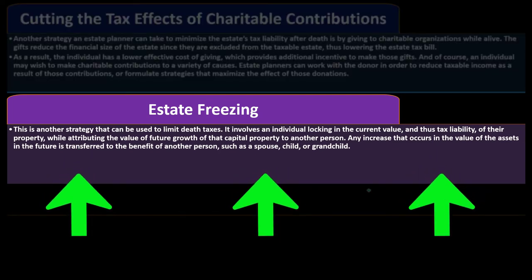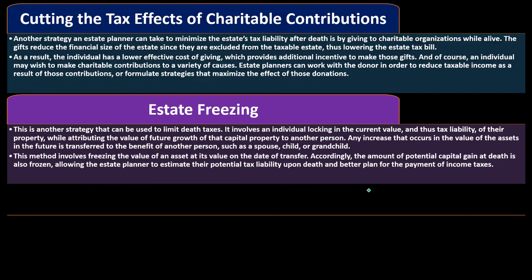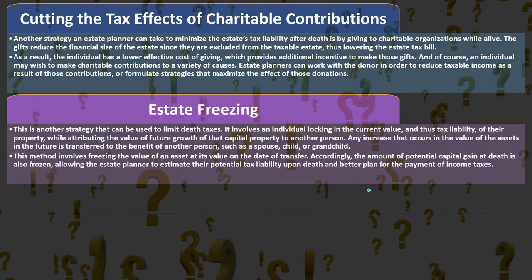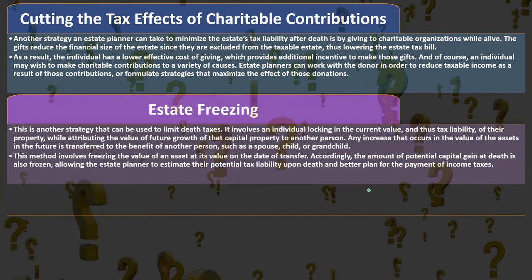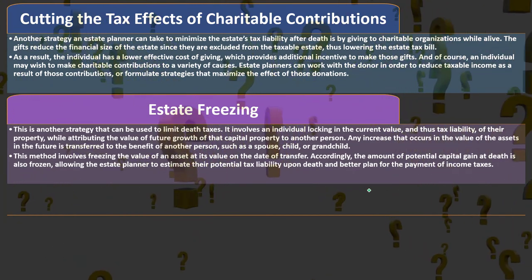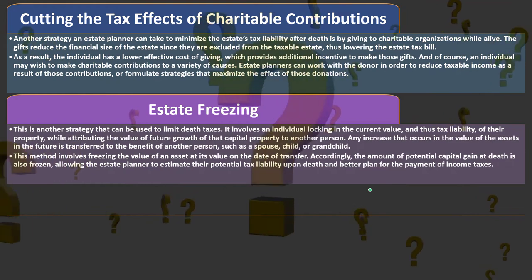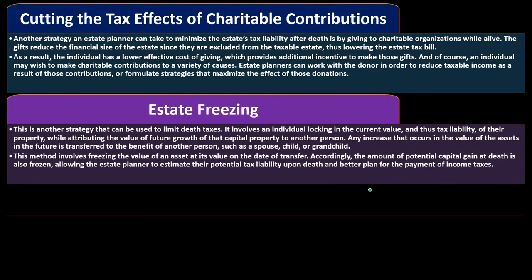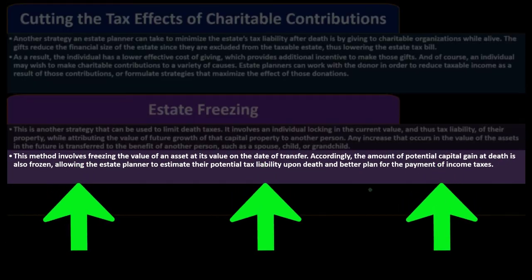Estate freezing involves an individual locking in the current value — and thus tax liability — of property, while attributing the value of future growth of that capital property to another person such as a spouse, child, or grandchild. It's a complex structure, but the reason for such complexity is taxes. The method freezes the value of assets at their value on the date of transfer.